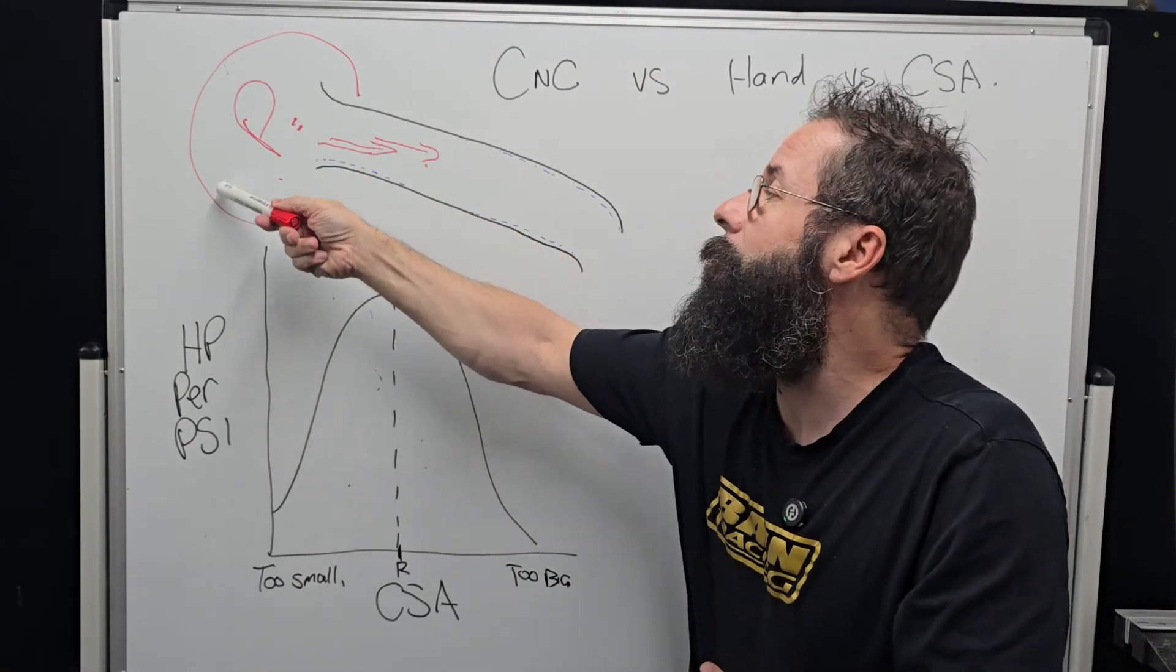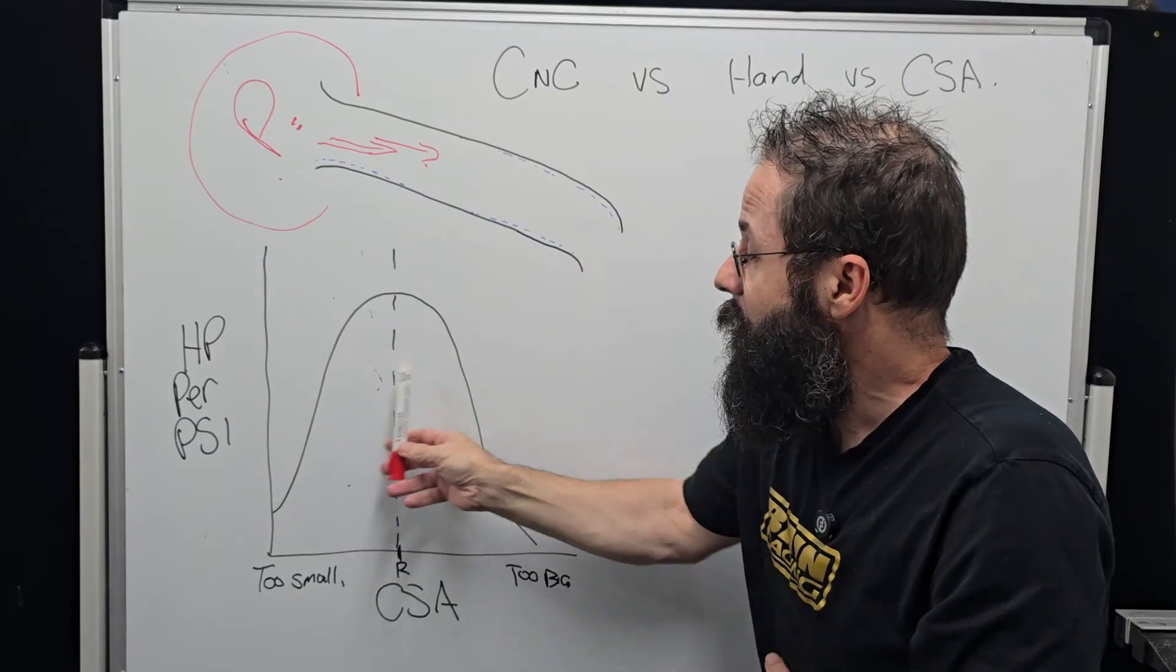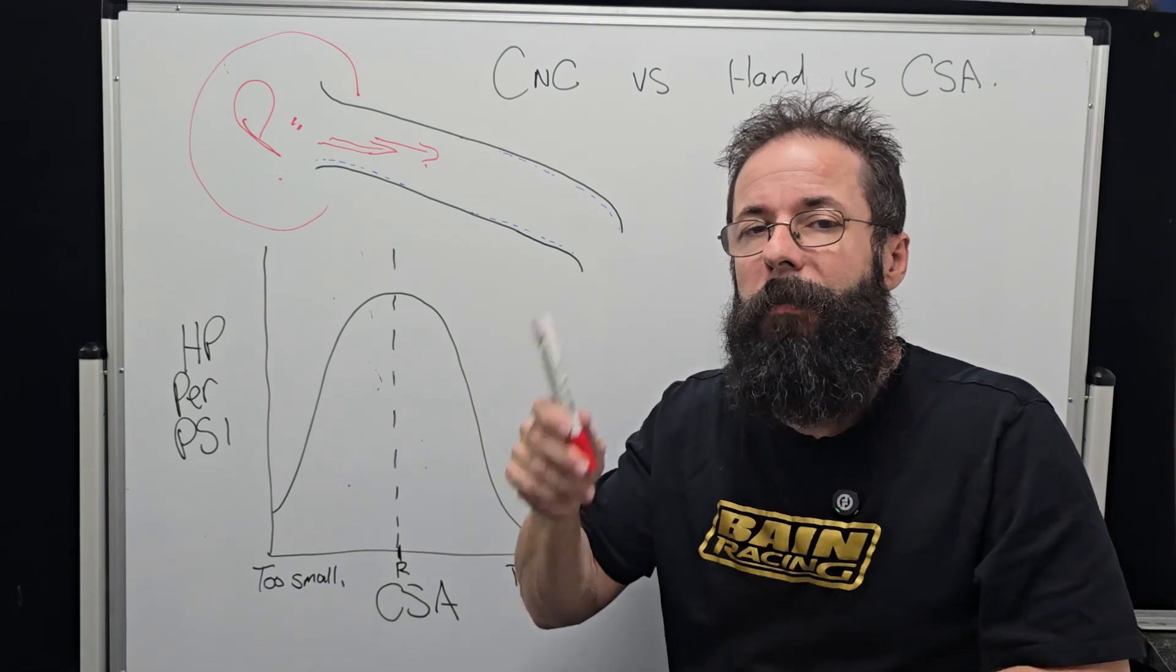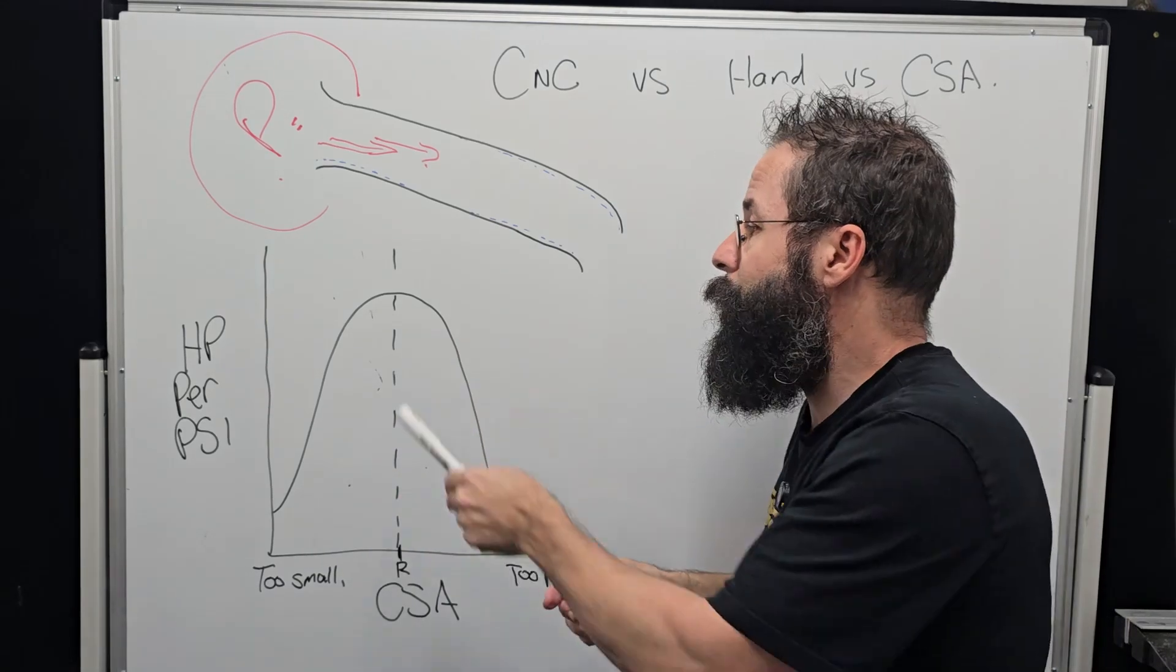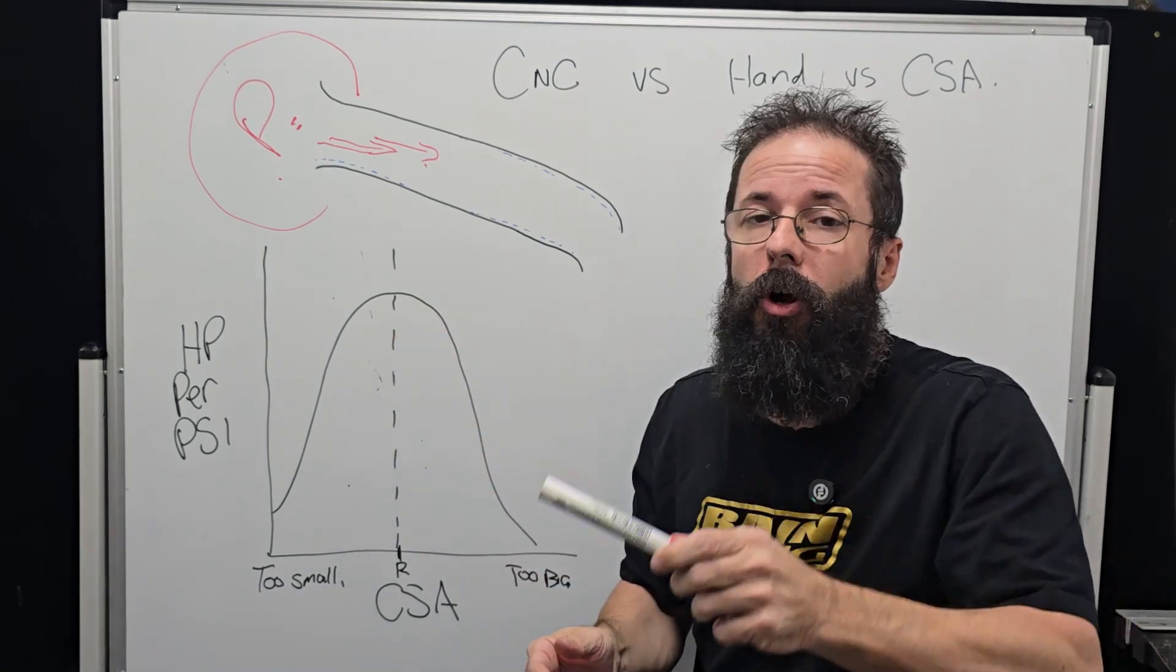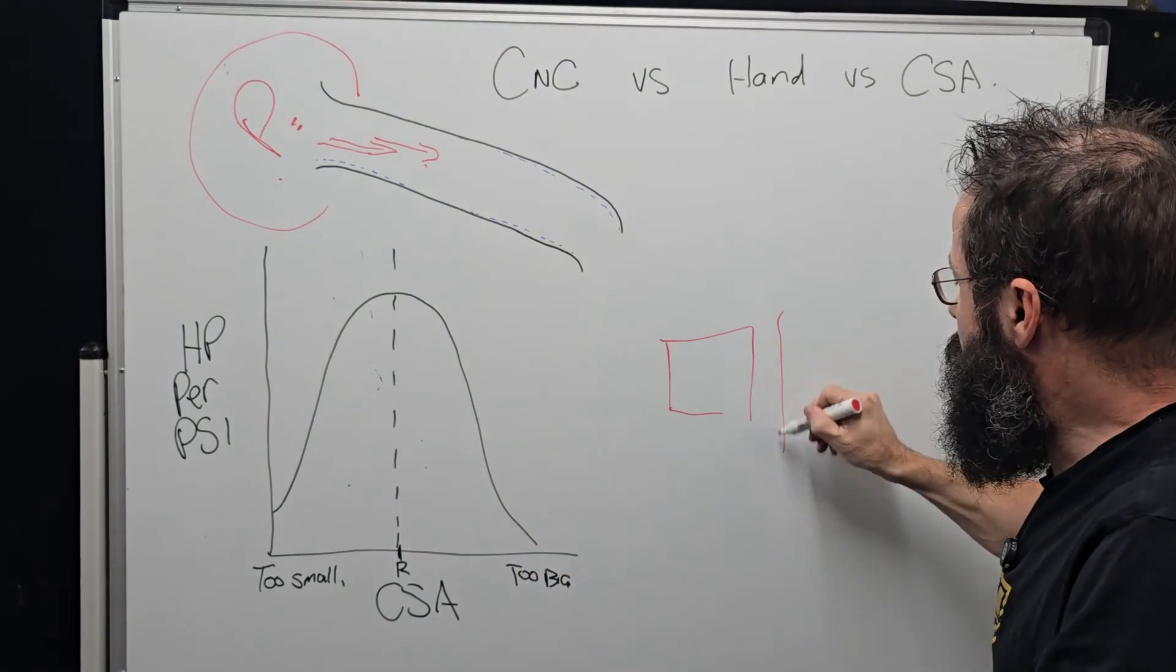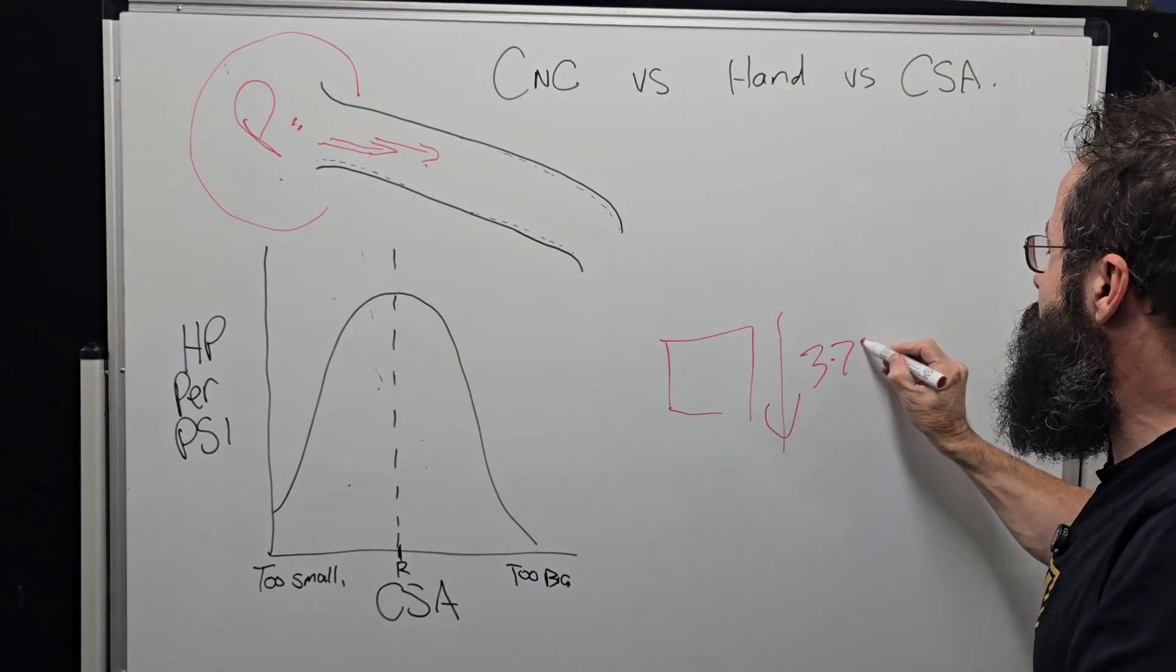The better we can carry that velocity, the more we reduce the pressure in the plenum, the more it can fill, the more mass we get into the cylinder. CSA is so important that it's tied to the RPM and cubic capacity that we're doing, because we cannot change the pressure offset to the RPM.